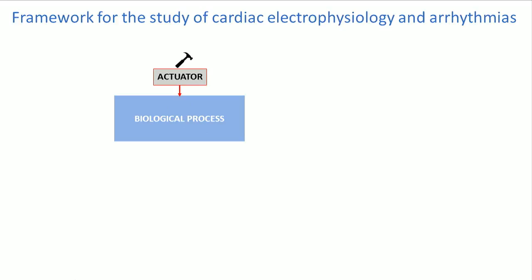To understand a complex biological process, we typically require tools to be able to perturb it — actuators — and to be able to observe it — sensors. And ideally, in order to really understand it, we want to be able to control it.